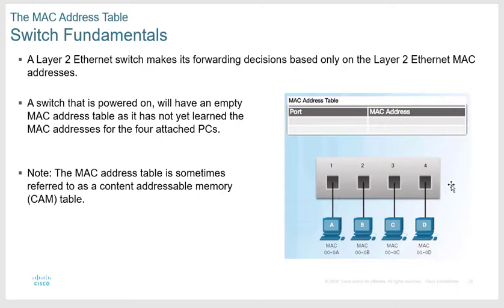The source MAC addresses are recorded in the CAM — the content addressable memory or MAC address table. The destination address is not recorded at first because the switch doesn't know where the destination is until that device responds back. When PC A sends on port 1, the switch knows PC A's source address, but it doesn't know the destination until PC D replies.